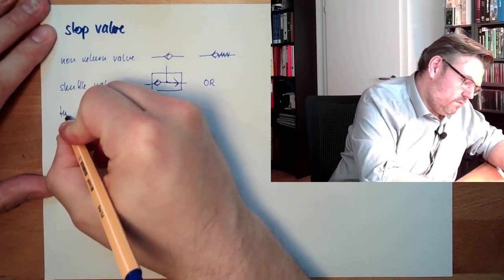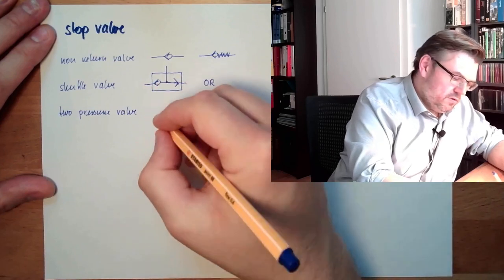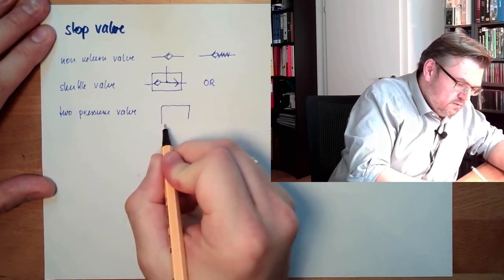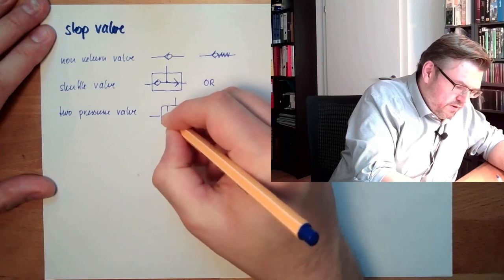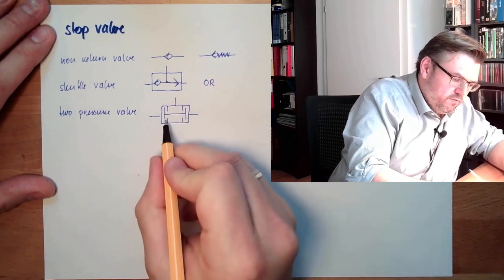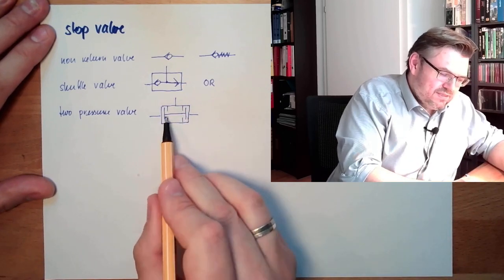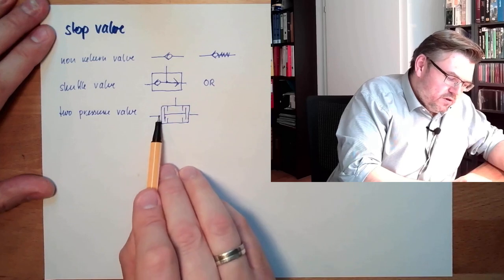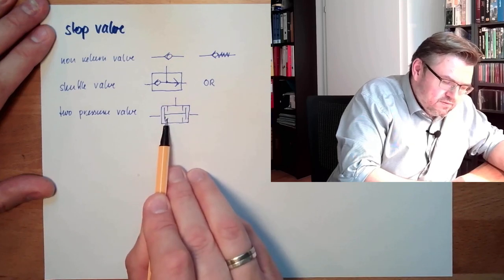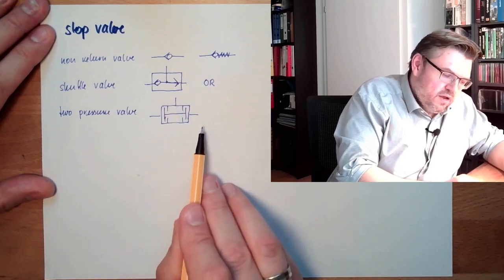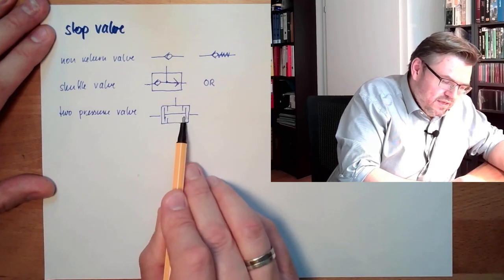And then there are two-pressure valves. This looks like this — it has three connectors. The symbol looks a little bit different; it should be a piston or two pistons connected with a rod. If the pressure is coming from one side, it will shift this piston to the right-hand side and it will seal the other port, so there is no pressure at the output. If pressure is coming from the other side, it will do the same but on the other side — it will seal that port, also no pressure at output.